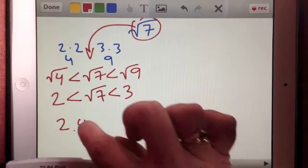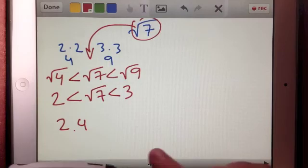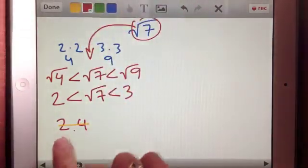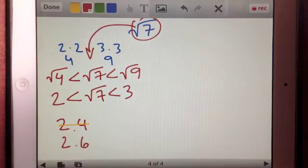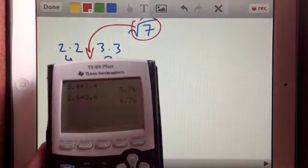I think I can get closer if I change the 4 tenths to maybe something like 6 tenths. Let's try that. So let's cross this out, keep track of what we're trying, and let's try 2.6. So 2.6 times 2.6, which equals 7.76. Now I'm getting closer to 7.